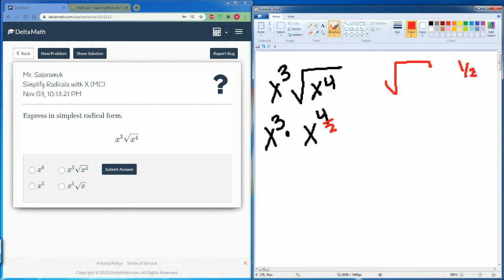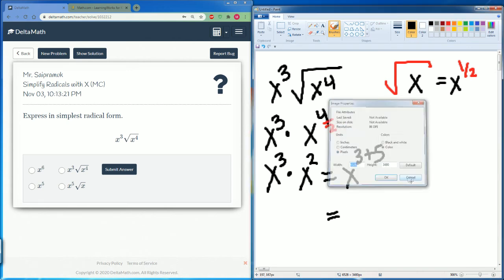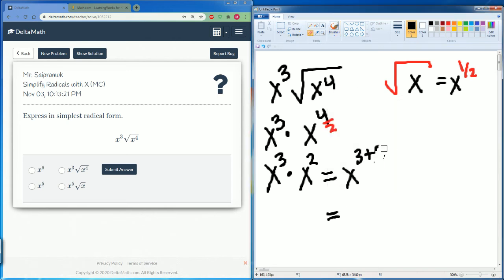The radical of x is equal to x to the one-half, so that's where the divide by 2 is. This becomes x to the 3 times x to the 2. At this point, these two can add to make 3 plus 2, which makes x to the fifth.